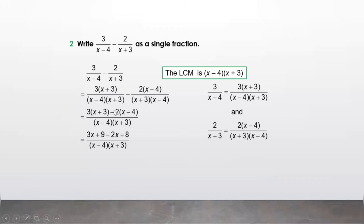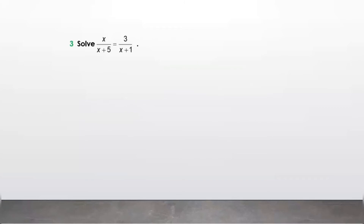Expanding: 3 times x is 3x, 3 times 3 is 9, minus 2 times x is minus 2x, and minus 2 times minus 4 is plus 8. Simplifying: 3x minus 2x is x, and 9 plus 8 is 17. So we get x plus 17 upon (x minus 4)(x plus 3). We have written the subtraction of two fractions as a single fraction.